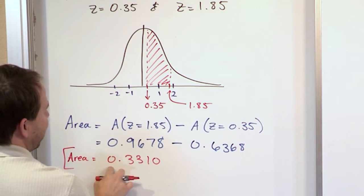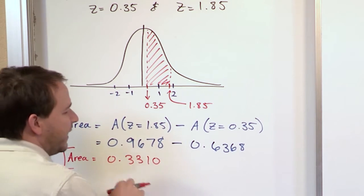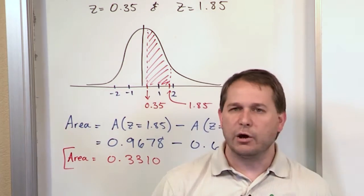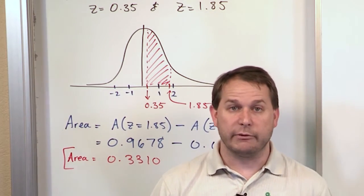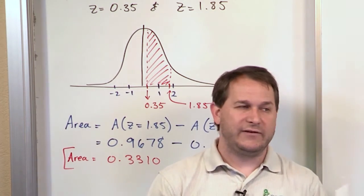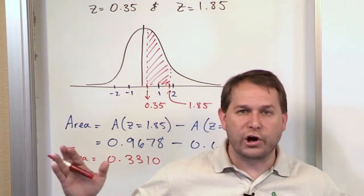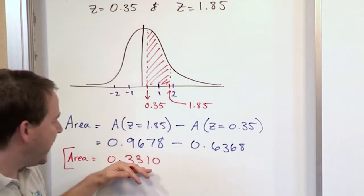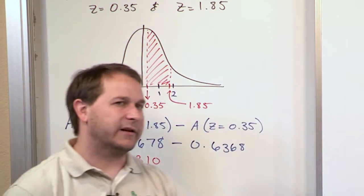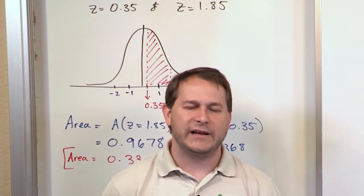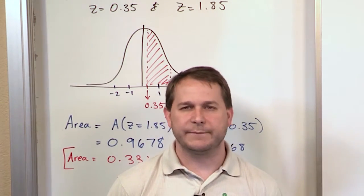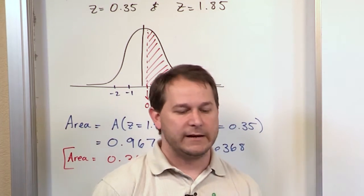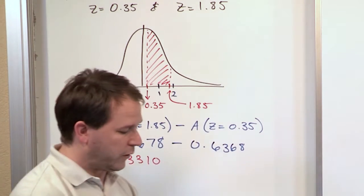Notice the answers for these areas are always going to be less than 1 because they're probabilities, and probabilities can only go between 0 and 1. If you take the area of the whole curve, it's only going to give you 1. So if you ever get a weird area like 2.5, you've done something wrong. Area has to be a probability between 0 and 1.